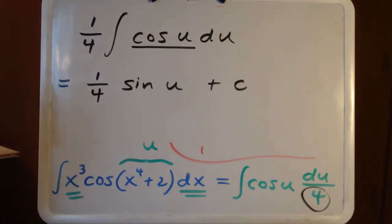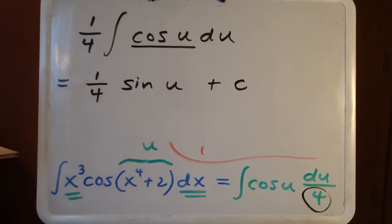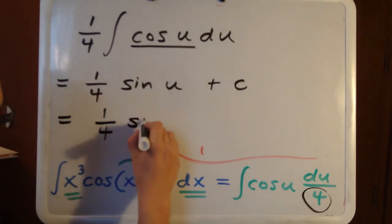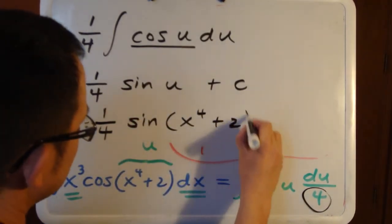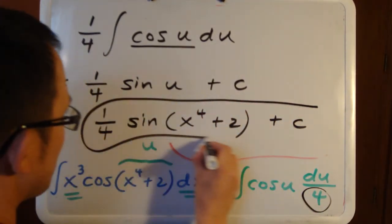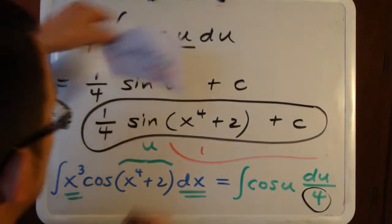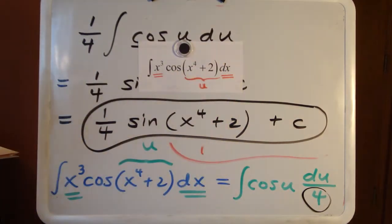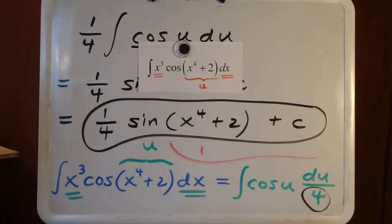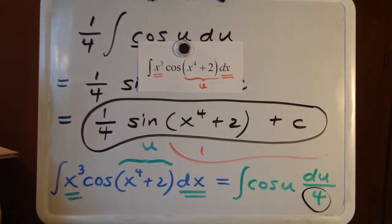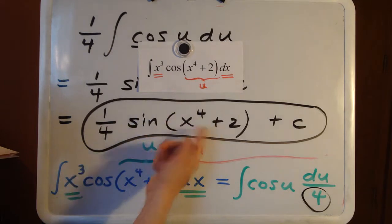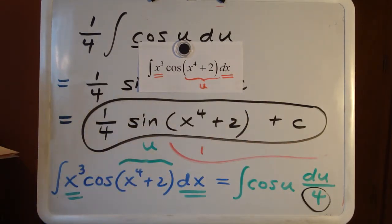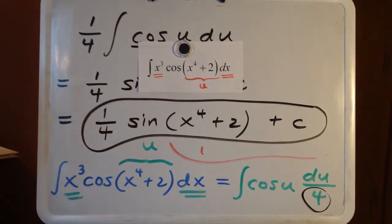This here would be the answer to the problem. But if the problem is given in terms of x, you want to give the answer back in terms of x. Since u is x to the 4th plus 2, we substitute back, and our final answer is one-quarter times sine of x to the 4th plus 2, plus C. To verify: the derivative of sine of x to the 4th plus 2 gives cosine of x to the 4th plus 2, and the chain rule produces a 4x cubed — the 4's cancel, leaving x cubed, which matches the integrand.